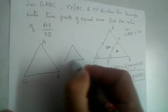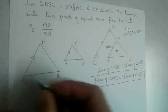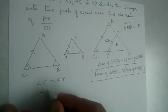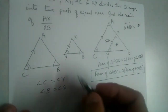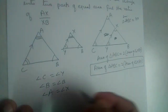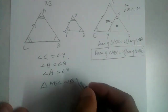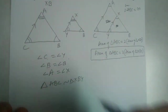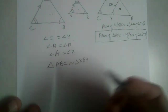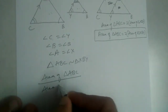The two similar triangles are ABC and XBY. XY is parallel to AC, which means angle C equals angle Y, angle B is common, and angle A equals angle X. So we can say triangle ABC is similar to triangle XBY by the Angle-Angle-Angle criteria, since all three angles are equal.